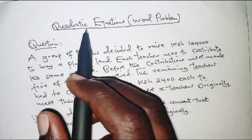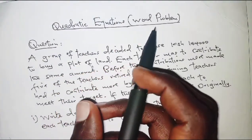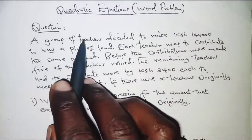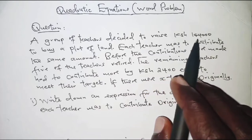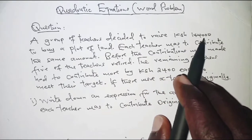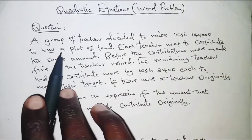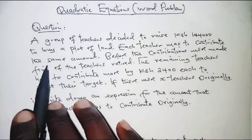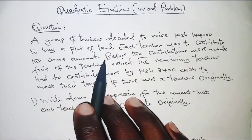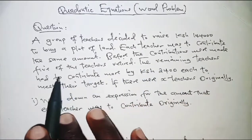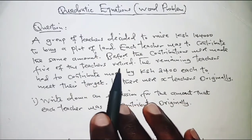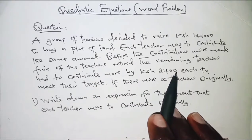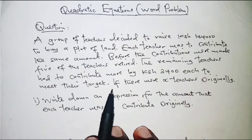Today we will form and solve a quadratic equation from a word problem. A group of teachers decided to raise 144,000 Kenyan shillings to buy a plot of land. Each teacher was to contribute the same amount. Before the contributions were made, five of the teachers retired.